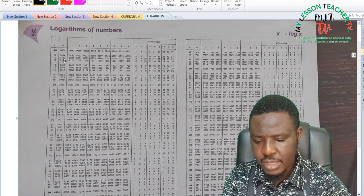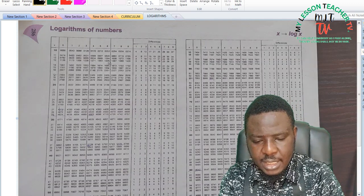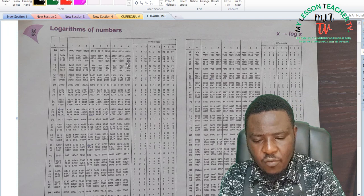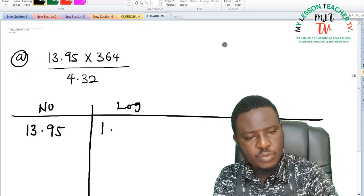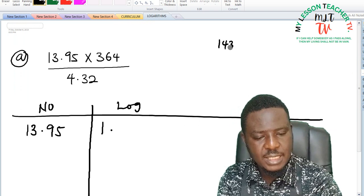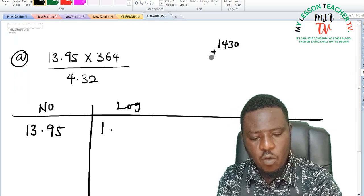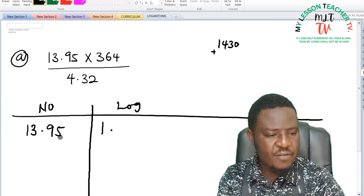So when you go to your logarithm table, 13 under 9 is giving me 1430. So this is going to be 1430.